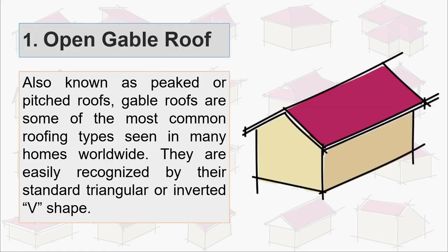The first one we have is open gable roof, also known as peaked or pitched roofs. Gable roofs are some of the most common roofing types seen in many homes worldwide and they are easily recognized by their standard triangular or inverted V shape.